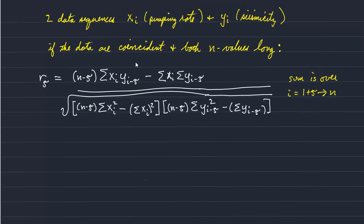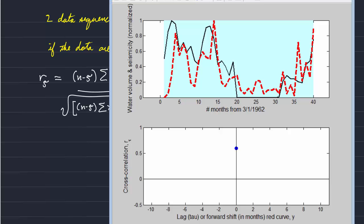So it turns out that the data sequence of the Rocky Mountain Arsenal are coincident. They both are measured at the same time at the end of the month. And the records are the same length. So we can use this equation. And let's look at the example.